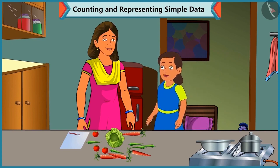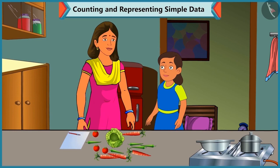Bubbly asks her Mummy what she is doing. Mummy explains she is checking which vegetables are left and how many. Bubbly offers to help. Mummy says they will group the vegetables, count them, and write their numbers.